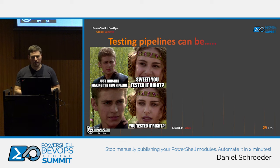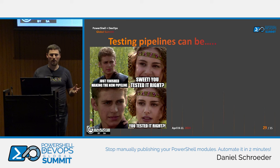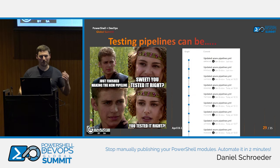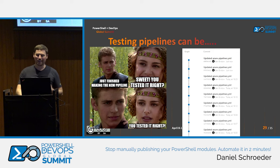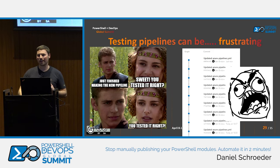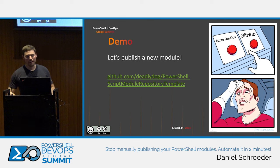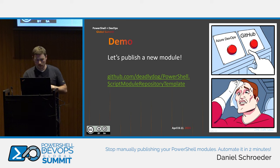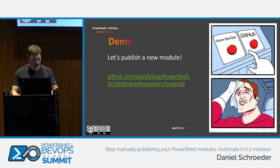Who here has actually created a deployment pipeline before? About half the room. You've probably run into the frustrating problem of testing pipelines: commit, commit, commit, just trying to get the thing to work. We want to avoid that. What I'm going to demo now is a new module that's also a GitHub repository. Here's the URL for anyone who wants it — it's my GitHub, PowerShell Script Module Repository Template.